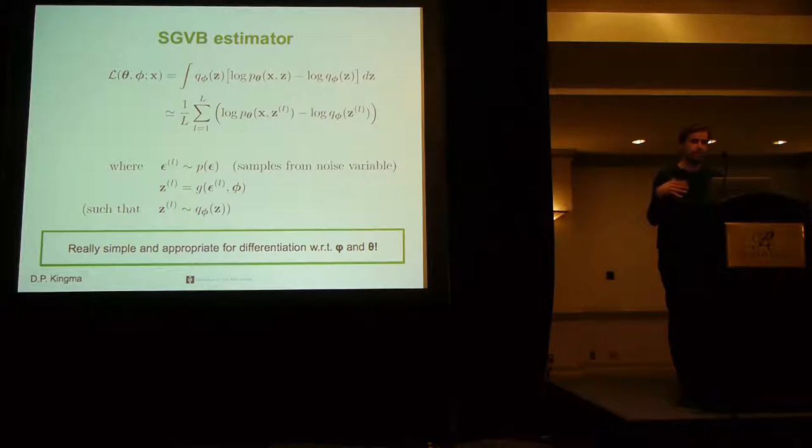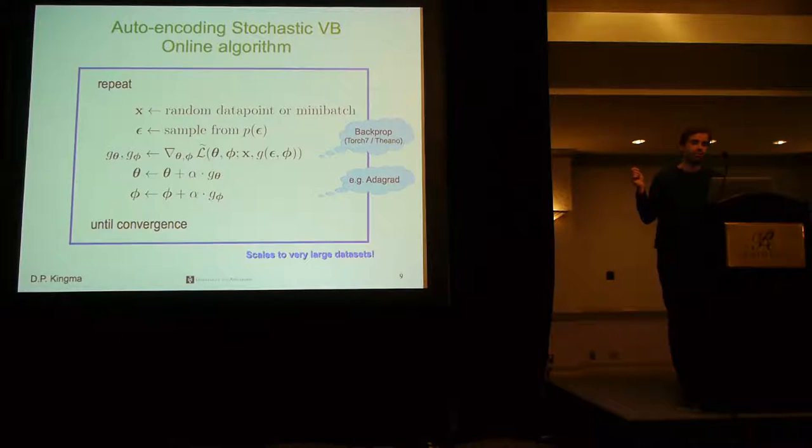Using this technique, we can form this estimator of the lower bound, which we can differentiate with respect to everything jointly, which is very simple, and we arrive at this algorithm, which is online, so it scales to very large data sets. At each iteration, you simply sample some data points, or some mini-batch, from your training set. You sample epsilon from the prior. You plug these two into your estimator of the lower bound. You take gradients using your favorite backpropagation techniques or software. And then you use these gradients to update your parameters using, for example, Adagrad or a fixed step size.